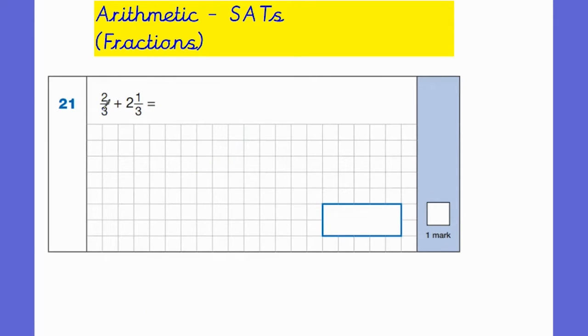Okay, this time we have a question where we are adding fractions but we're adding a mixed number this time, and there are a few different ways you can do this. The most straightforward way is probably to convert the mixed number into an improper fraction. So 2 thirds add, and we need to do 3 times 2 which gives us 6, add the 1 which gives us 7, and then we do 2 add 7 which is 9 and our 3 stays the same. You would get a mark if you left it like this, but you should really convert it back. 3 goes into 9 three times and my answer is 3.